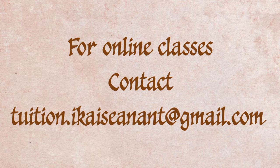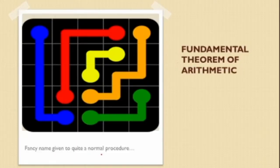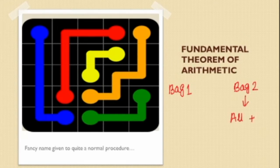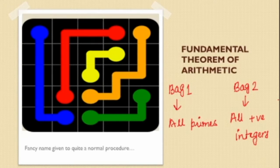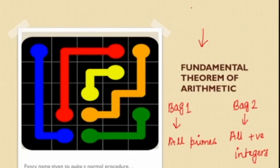Now let's understand what the Fundamental Theorem of Arithmetic is. It's a fancy name given to a very normal procedure. To understand it, consider two bags — Bag 1 and Bag 2. In Bag 2 you have all the positive integers, and in Bag 1 you have all the primes. The question is: is there any number in Bag 2 that cannot be written as the product of numbers in Bag 1? That is, can you find any number that cannot be decomposed into prime factors? This theorem is nothing but the prime factorization you already know.